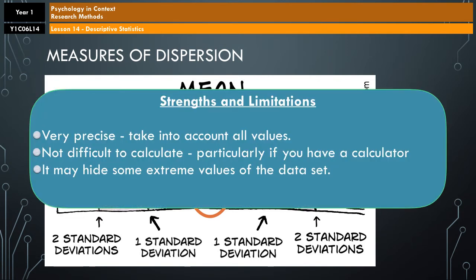Right, so, I'll just throw some strengths and limitations, so it's very precise, which is great. It takes account of all values. It's not massively difficult to calculate, particularly if you have a calculator, however, I will say that any of you doing AQA A-level psychology, you will not have to calculate the standard deviation, so don't worry about that. All you'll have to do is interpret it. One of the downsides is that it may hide some of the extreme values of the data set. But one of the ways that you are most likely to come across the standard deviation is with an interpretation question. So maybe a comparison between the mean and the standard deviation, or what would you advise somebody as to a particular therapy based on the standard deviation and the mean of two different therapies, or something like that.